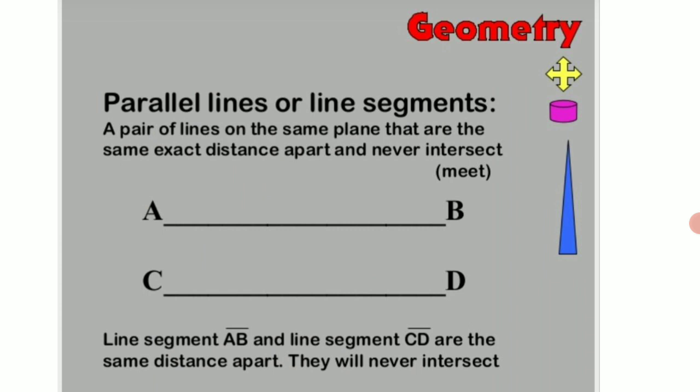Now let us know a little more about what parallel line means though it is not in your portion but to know is of no harm. A pair of lines on the same plane that are the same exact distance apart and they never meet or intersect each other.